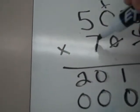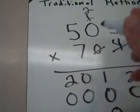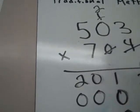I carry my 2. 7 times 0 is 0. But I have my 2. And then 7 times 5. 35.